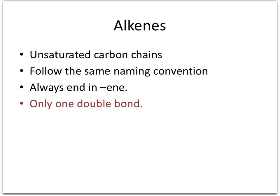Alkenes are said to be unsaturated carbon chains because they contain one carbon-carbon double bond. They follow the same naming convention as the alkanes, but in this case they always end in "-ene". All the alkenes you will find in your exam will only contain one double bond.